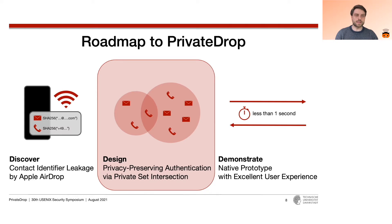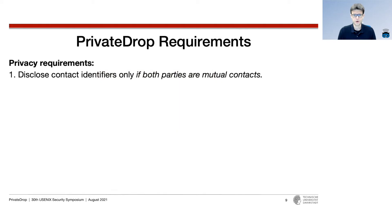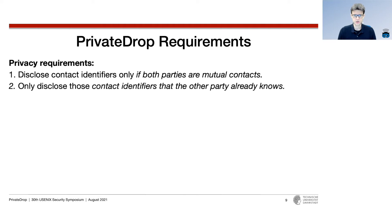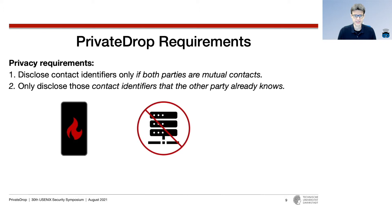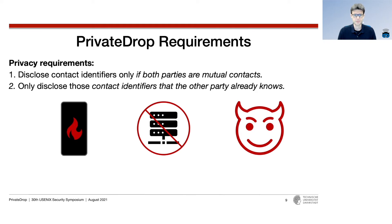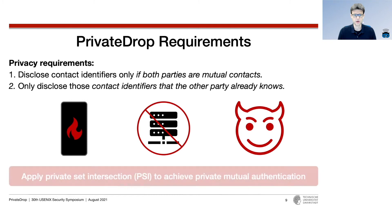Now let's take a look at our design to provide privacy-preserving mutual authentication for Apple AirDrop. For our solution in PrivateDrop, we have two main privacy requirements. First, we want to disclose contact identifiers only if both parties are mutual contacts. Second, we want to disclose only those contact identifiers that the other party already knows, to prevent receiver leakage. Additionally, we have to keep the overhead low since we operate on mobile devices, the authentication must work in offline scenarios, and we have to consider that users might act maliciously. We fulfill all these requirements with a technique called Private Set Intersection.